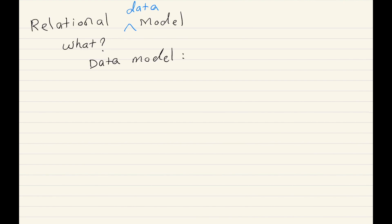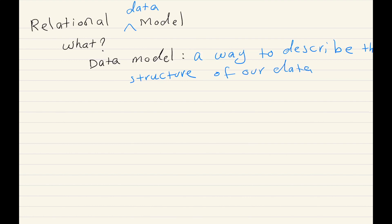A data model is a way to describe the structure of our data. To give you an example, suppose I have a name, age, and phone, and I want to record this information. The question is: what should be the structure of this data? I'm not talking about the data itself — the actual names, phones, ages. It is basically how I'm going to structure it. And for the same reason, I want to emphasize this structure here. So this is a data model.